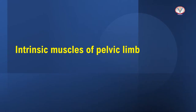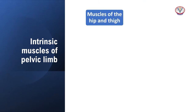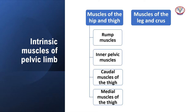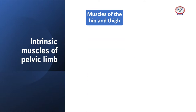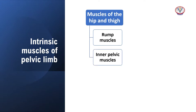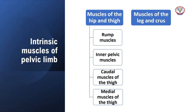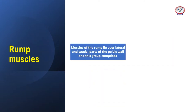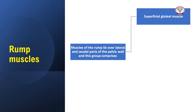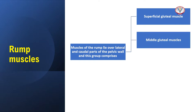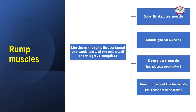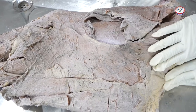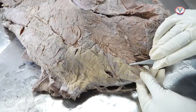The intrinsic group of muscles of the hind limb provide forward impetus to locomotion and comprise the muscles of hip and thigh and muscles of leg and crus, which includes extensors and flexors. The hip muscles comprise rump muscles, caudal muscles of thigh, medial muscles of thigh, and interpelvic muscles. The rump muscles include superficial gluteal muscle, middle gluteal muscle and gluteus accessorius, deep gluteal muscle, and tensor fascia lata.